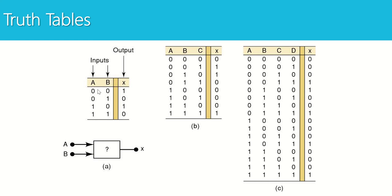With two inputs A and B, we have four possible input combinations: 0-0, 0-1, 1-0, and 1-1. If we go to three inputs A, B, and C, the truth table gets bigger — now we have eight rows. With four inputs A, B, C, and D, we have 16 rows. As we add more inputs, the truth table has a larger number of rows, and each row represents a unique combination of those inputs. With four inputs, we start with all low and work through every possible combination until they're all high.